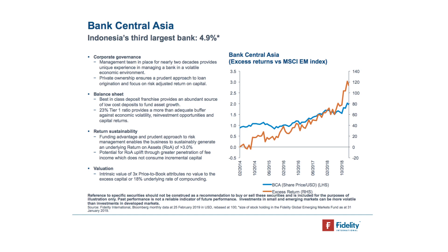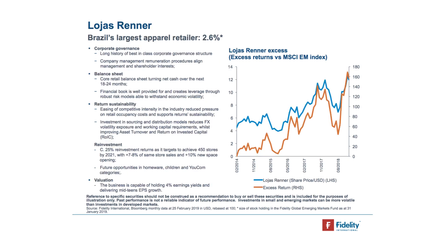Looking at the absolute share price in US dollar terms, you can see it has delivered very healthy absolute returns over the last five years. The superior levels of profitability versus the investment class as a whole has led to significant excess return versus the investment universe — healthy absolute returns, and even healthier relative returns. The next stock I wanted to highlight is a consumer business called Lohas Rena, which is Brazil's largest consumer apparel company and clothing retailer. Brazil is a market that has been through a very difficult economic time since 2015 — the Brazilian economy has witnessed the most severe recession anywhere globally in peacetime.